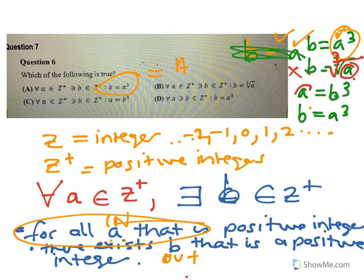B has to be an integer. So if I put in a value of a, will I necessarily get an integer value for b? No, the cube root of six, no.